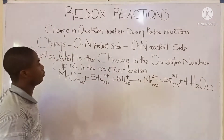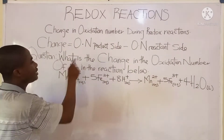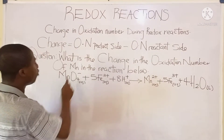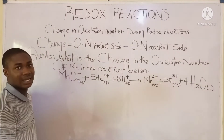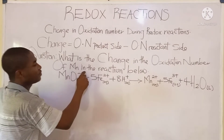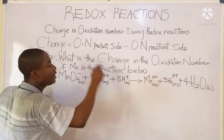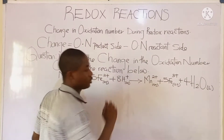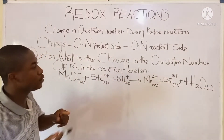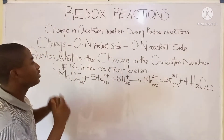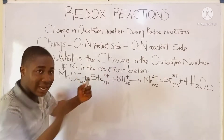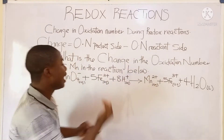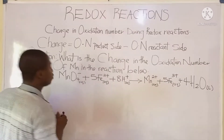Now, you can see this question: what is the change in the oxidation number of manganese in the reaction below? This is a redox reaction. What we simply do is bring out manganese from this reaction — manganese in the product side and manganese in the reactant side.